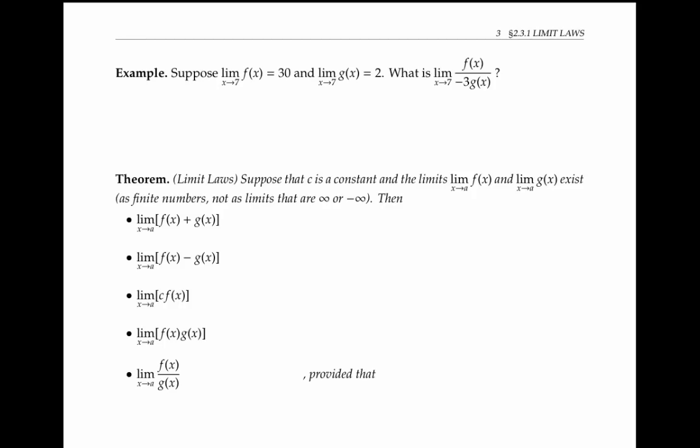Let's start with an example. Suppose that the limit as x goes to 7 of f(x) is 30, and the limit as x goes to 7 of g(x) is 2. What's the limit as x goes to 7 of f(x) divided by negative 3 times g(x)?